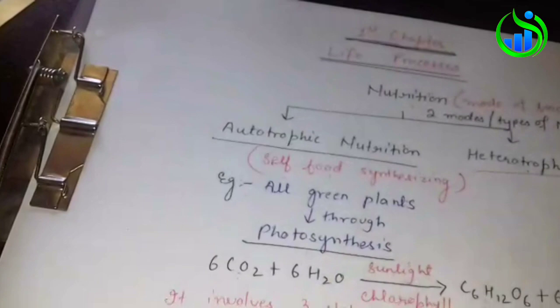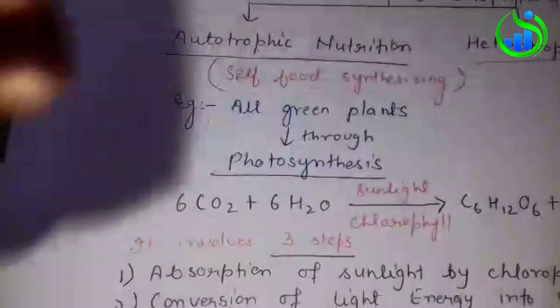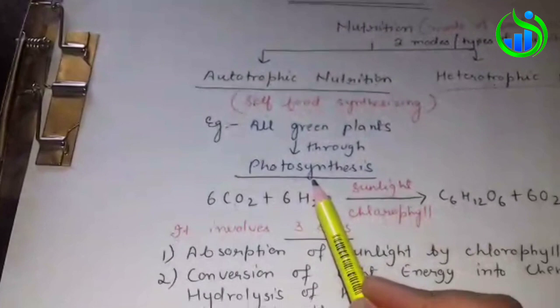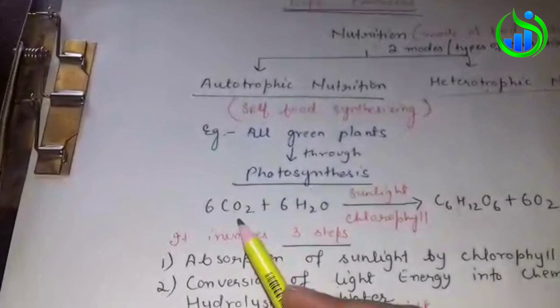The best example is green plants. Green plants prepare food through the process of photosynthesis. They use inorganic compounds like carbon dioxide and water.